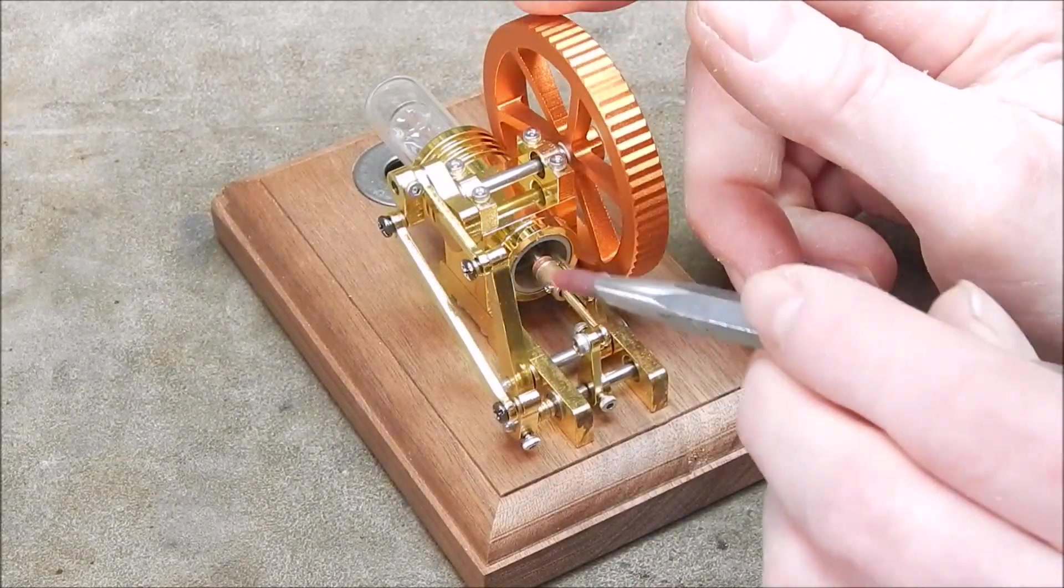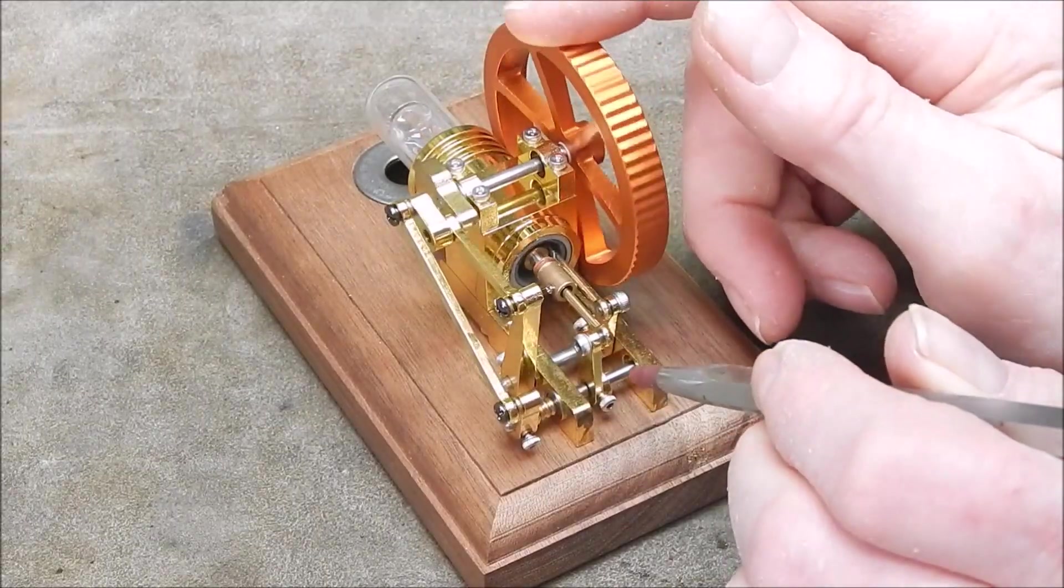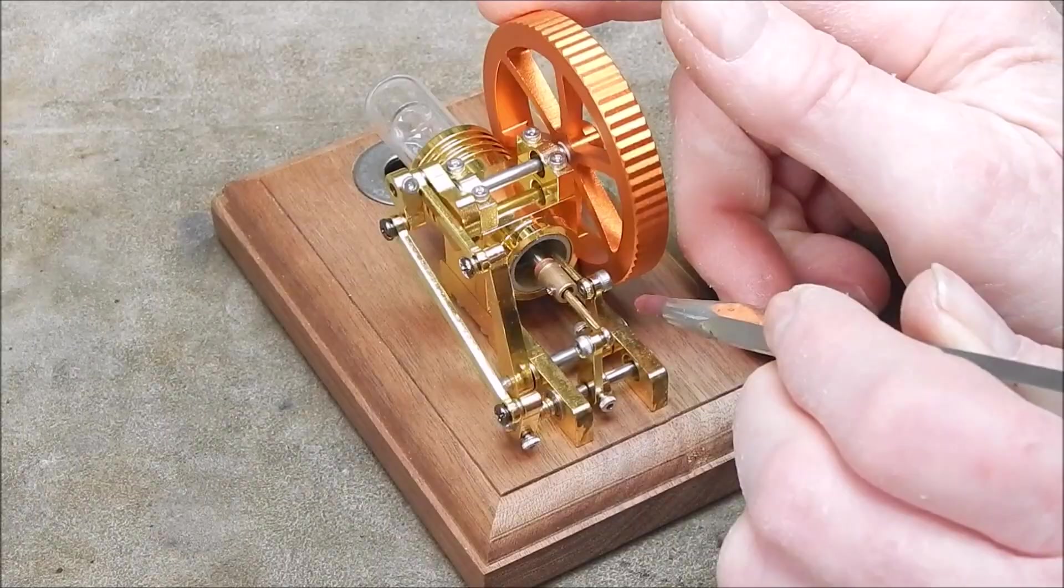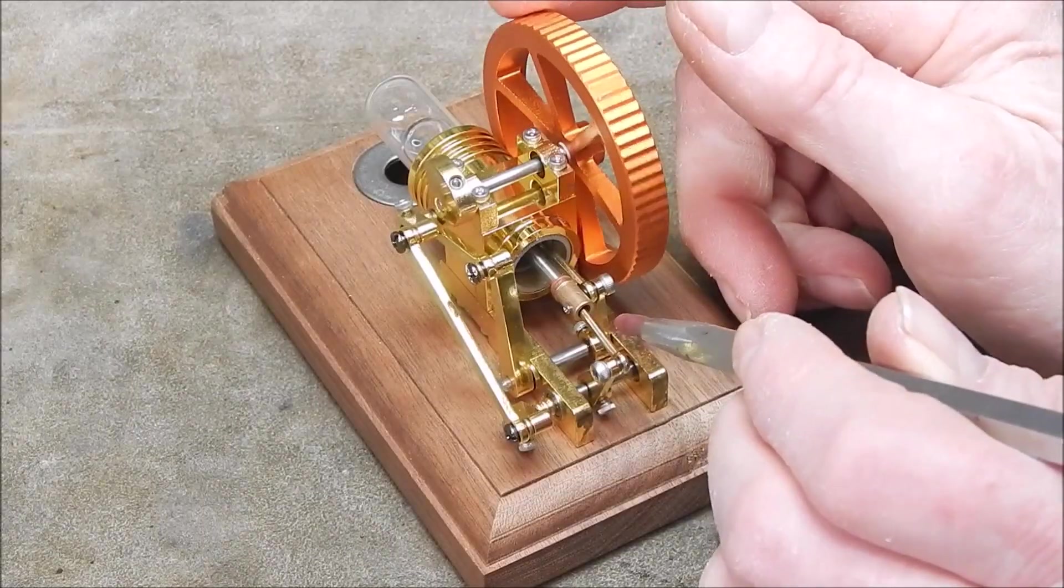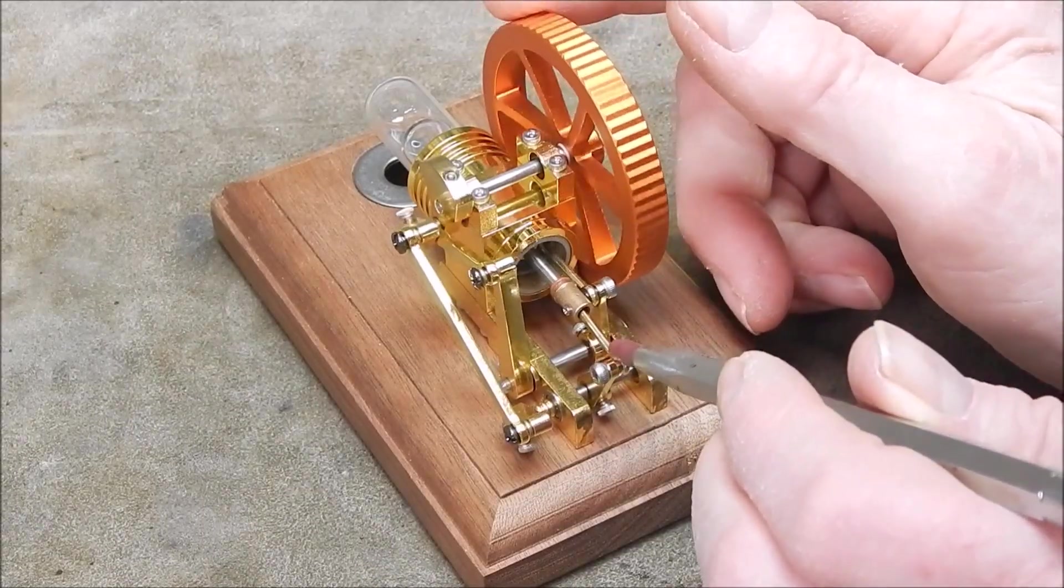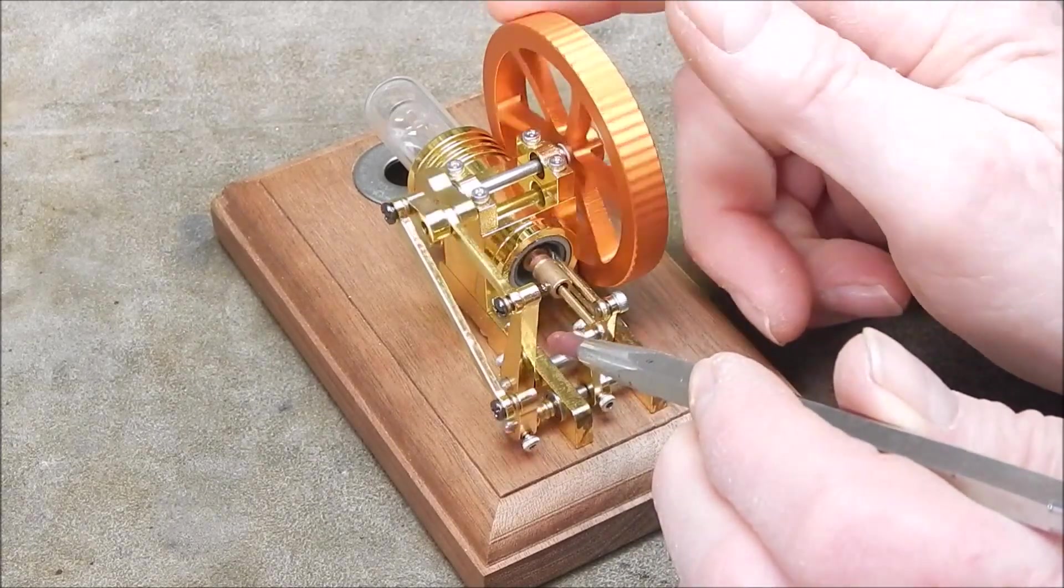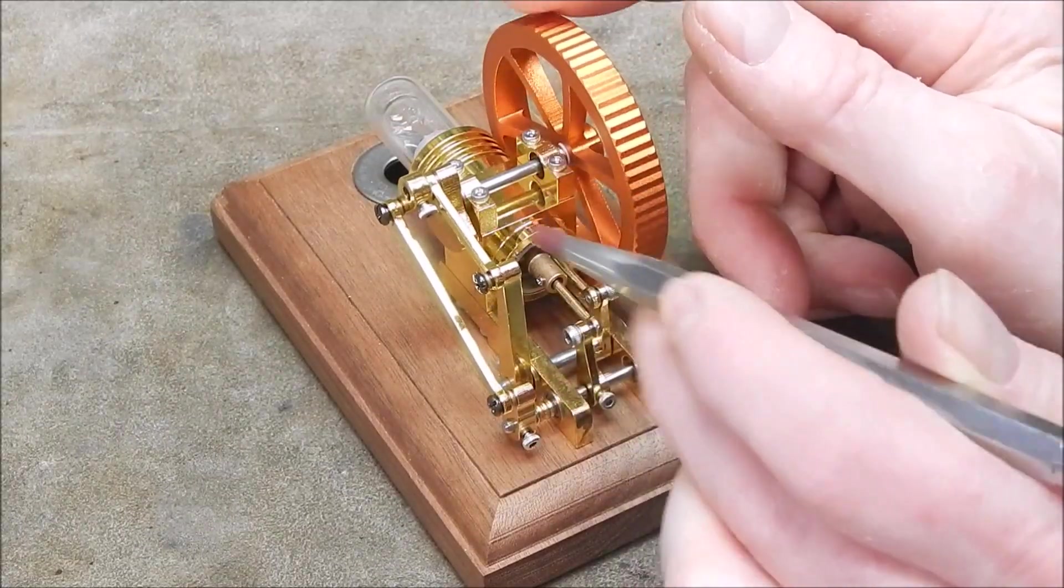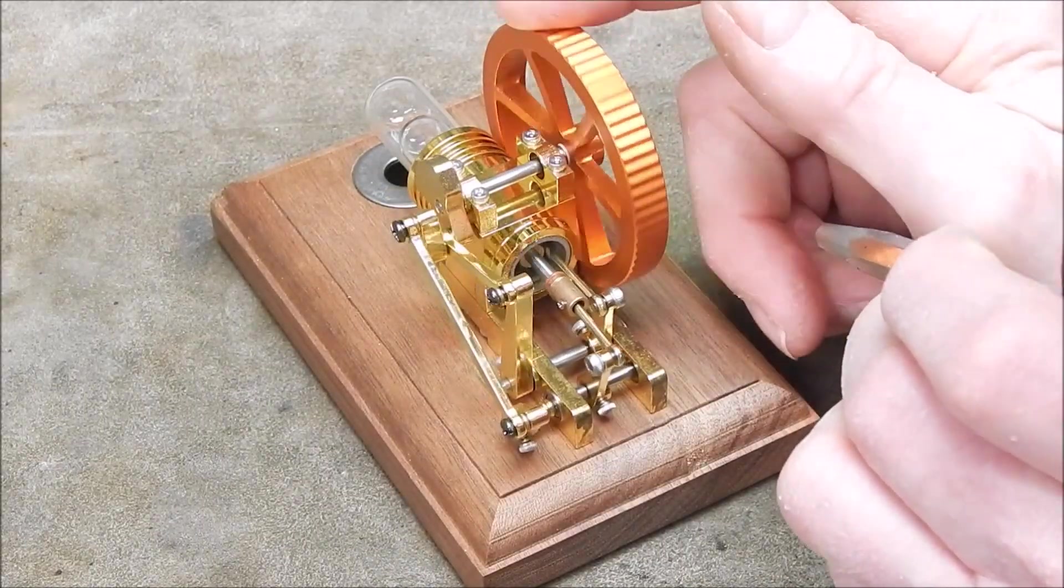And then you have a rocker assembly here which basically controls the action of both of the two pistons, and they're on cross shafts. And the rocker arm basically links up onto the crankshaft, or the common shaft I suppose you could say.